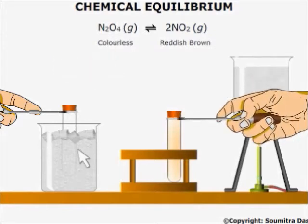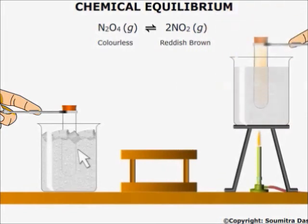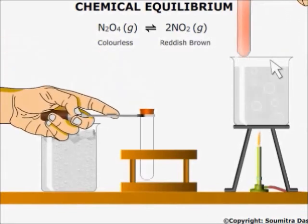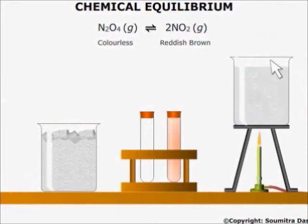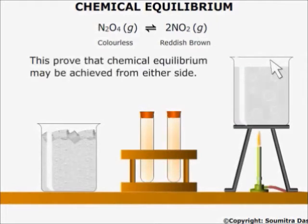Take another test tube containing NO2 gas at room temperature and dip it in boiling water. The temperature will increase and the ΔG of the forward reaction becomes negative and more NO2 is produced. The color of the gas in the test tube becomes more brownish in color. When both the test tubes are taken out and after a while when both reach room temperature, their color becomes light brown again. This proves that chemical equilibrium may be achieved from either side.